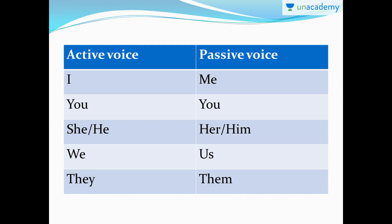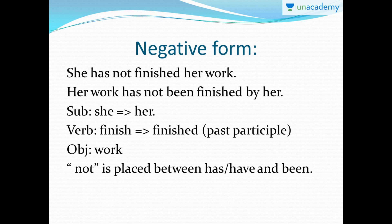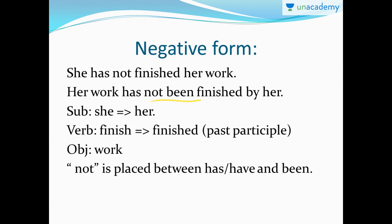We've finished the affirmative form; now we're going to do the negative form. 'She has not finished her homework.' Pay attention to where 'not' is placed — it is placed between 'has' and 'finished.' This is active voice because the subject is at the beginning. When you change it to passive voice, the object 'work' comes to the beginning, so: 'Her work has not been finished by her.' 'Been' comes in the sentence, placed between 'has' and the past participle of the verb.